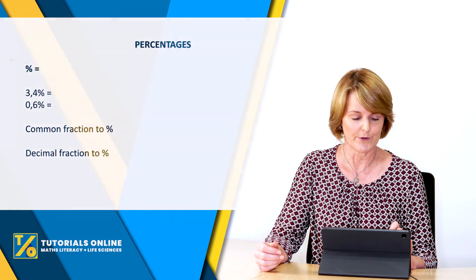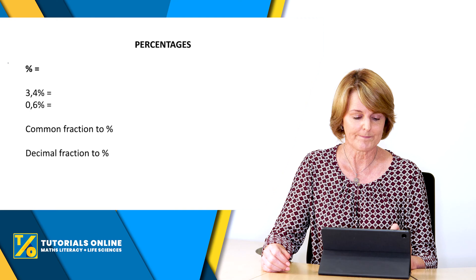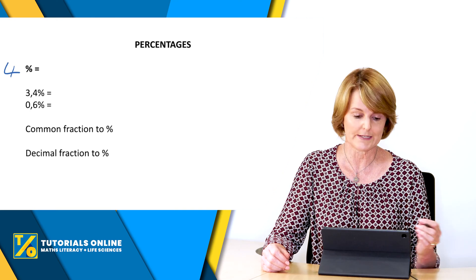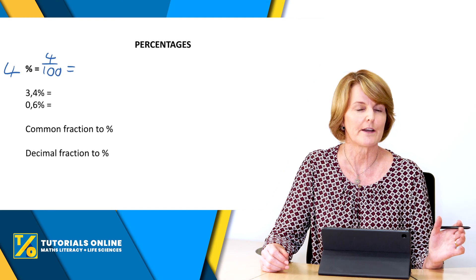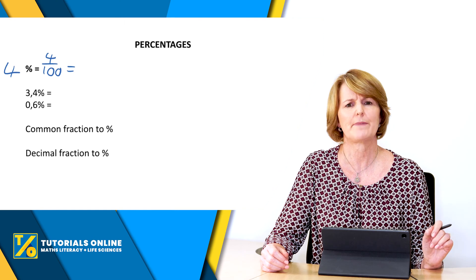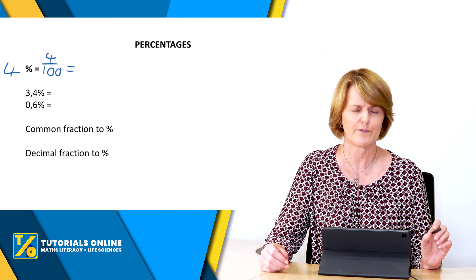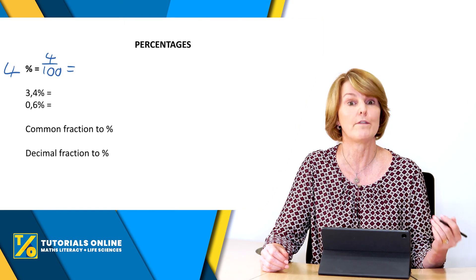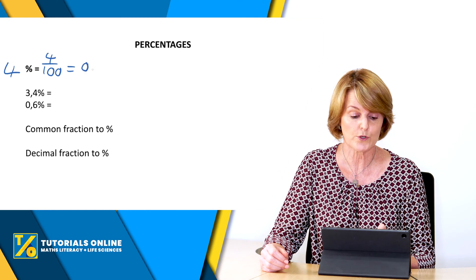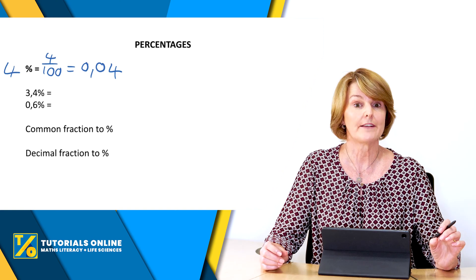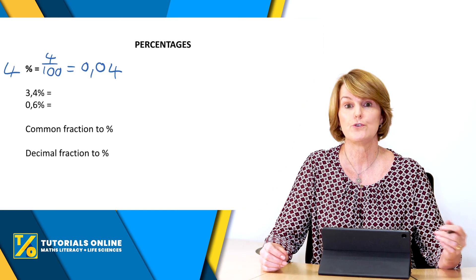If you look on the screen, you can see that you can rewrite 4% as four over a hundred. You might say that's basic, but even grade 12 learners make this mistake — they forget that 4% is actually four over a hundred, and that it can be written as 0,04, which is the number you use to do your calculations.